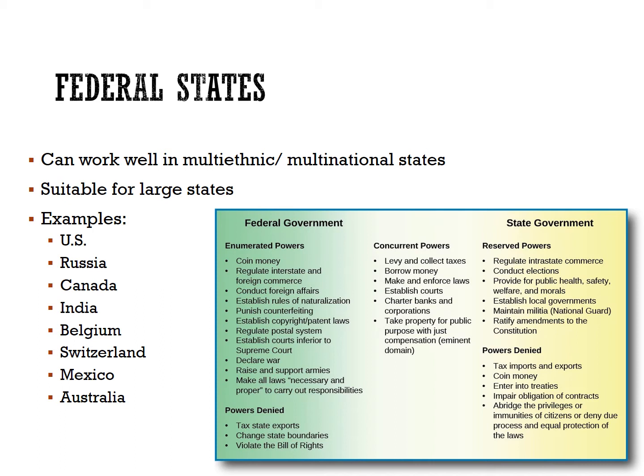Russia is a good example because it has adopted a more federalist structure to accommodate the demands of ethnic minorities as well as manage its huge land area. Thirty-one ethnic republics within Russia have achieved considerable autonomy, though one of these, Chechnya, has been fighting for independence from Russia.